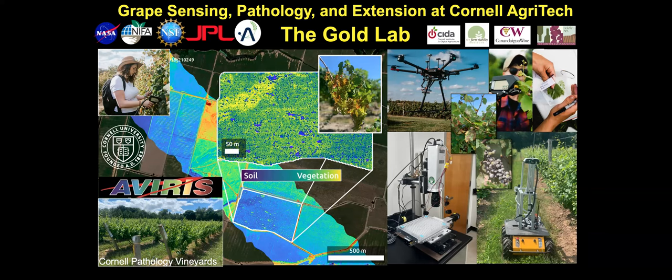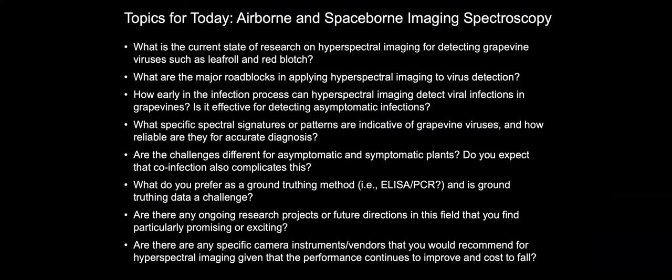I serve as NASA Acres Pest and Disease Risk Mitigation Lead. In this capacity, I help expand and educate upon the use of remote sensing, particularly spaceborne remote sensing, for pest and disease risk mitigation. Today, I've been asked to talk about prospects for early detection of grapevine viral diseases with hyperspectral imaging, which is a colloquial term for imaging spectroscopy. Due to my expertise, I will be focusing on airborne and spaceborne imaging spectroscopy today.